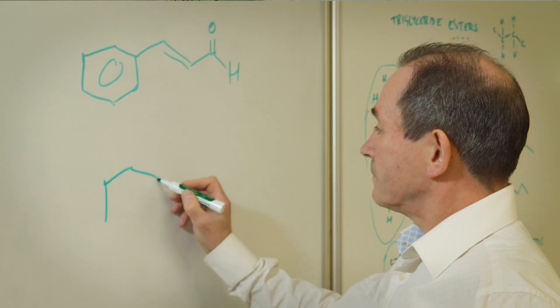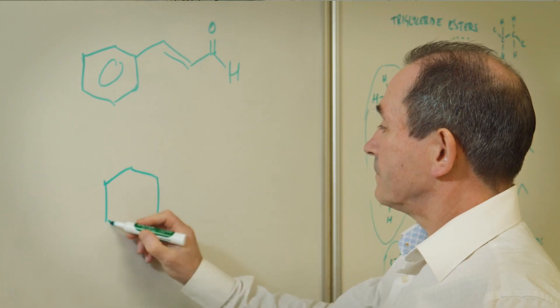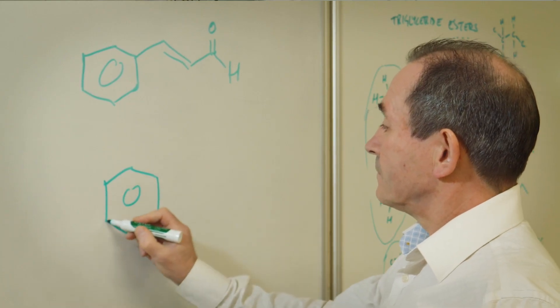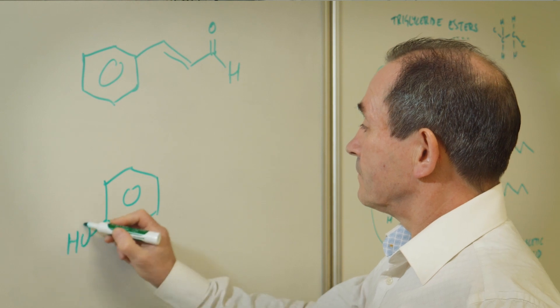The two different methods that can be used are known as the fragrance content method and the fragrance load method. Each method uses a percentage calculation but in a different way, so each method will give a different result.